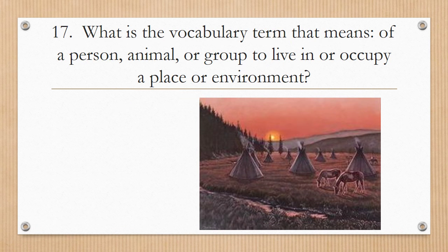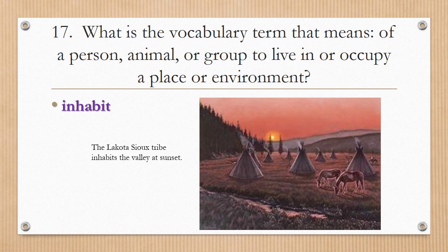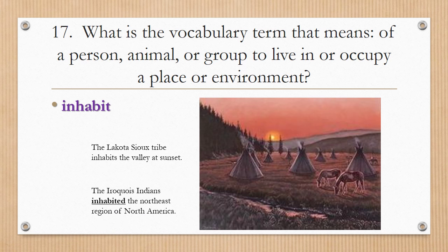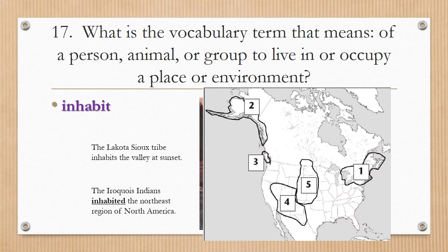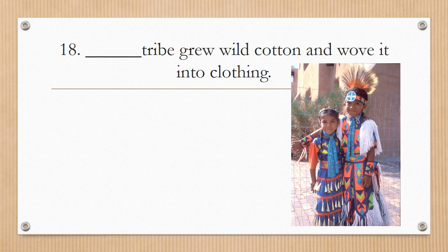Number seventeen: what is the vocabulary term that means for a person, animal, or group to live in or occupy a place or environment? Inhabit. You can see that the Lakota Sioux tribe inhabits the valley at sunset. The Iroquois Indians inhabited the northeast region of North America, shown with number one on the map.